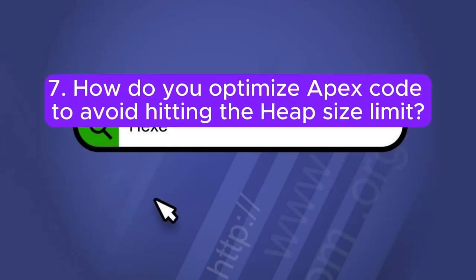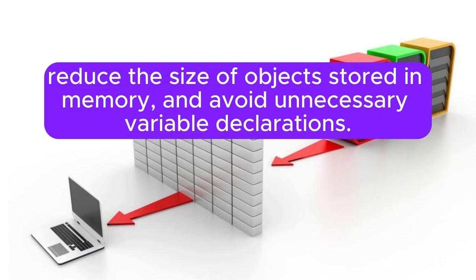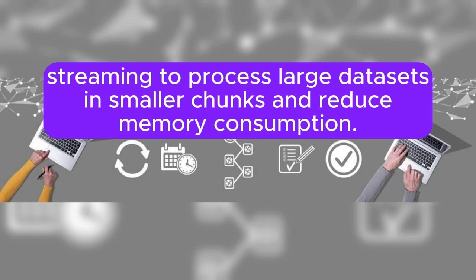Question 7: How do you optimize Apex code to avoid hitting the heap size limit? Answer: To optimize Apex code and avoid hitting the heap size limit, you can minimize the use of large collections, reduce the size of objects stored in memory, and avoid unnecessary variable declarations. You can also use techniques such as lazy loading, pagination, and streaming to process large data sets in smaller chunks and reduce memory consumption.